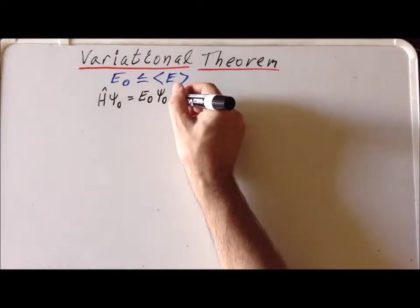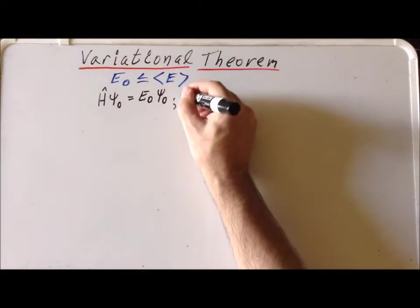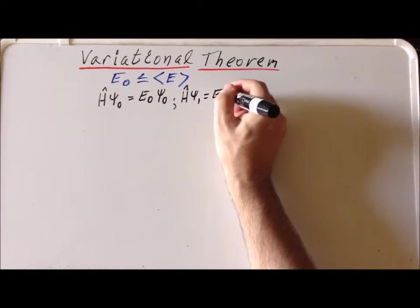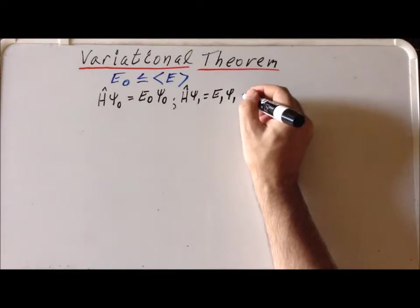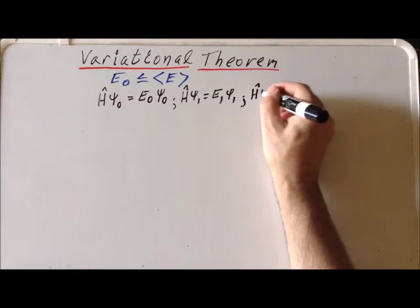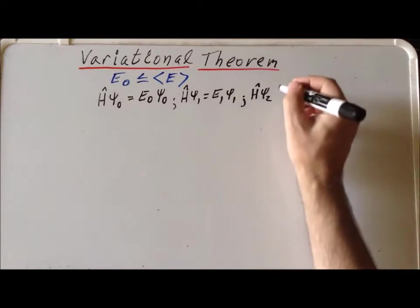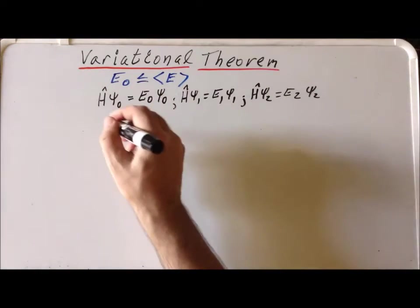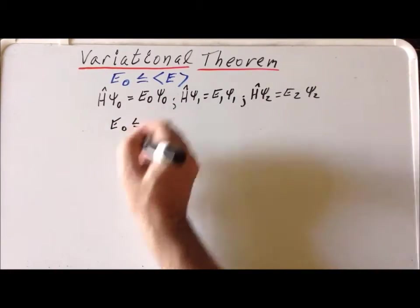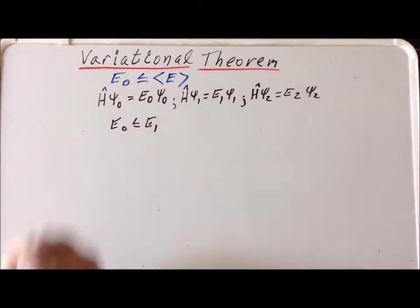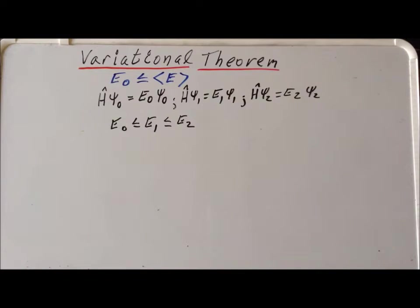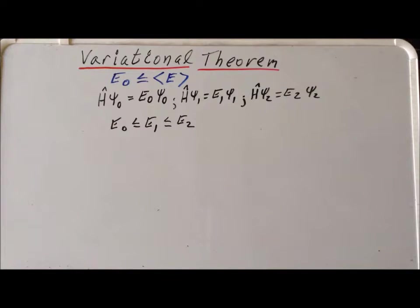Let's also assume that we have other eigenfunctions of the same operator. So let's assume that if we have psi 1, its eigenvalue is going to be E1. And if we have psi 2, it has the eigenvalue E2. Since E sub 0 is the ground state, we can always arrange our eigenvalues such that E1 is greater than E0 and E2 is greater than E1. This is a specific example because we're limiting our discussion to simply three eigenfunctions with the three corresponding eigenvalues.